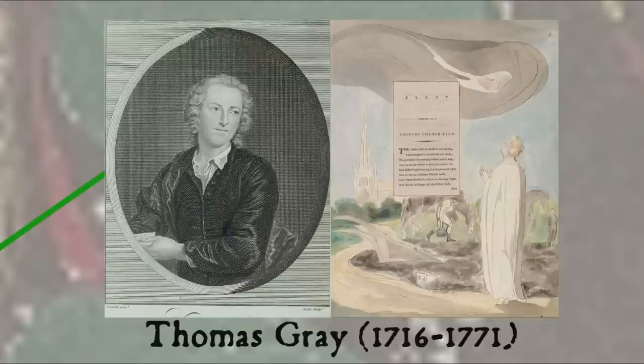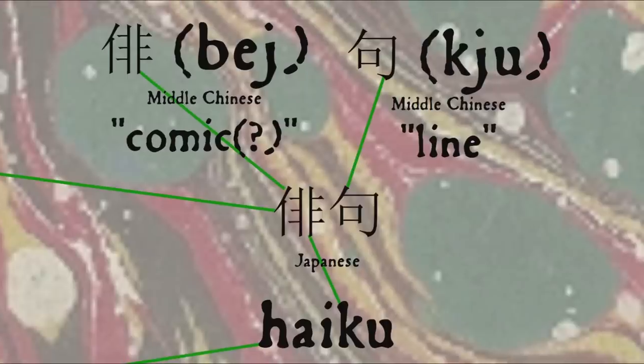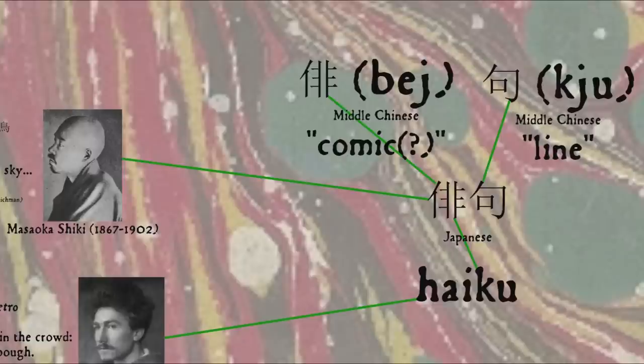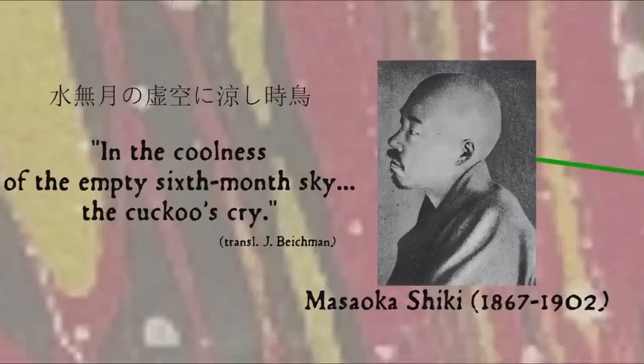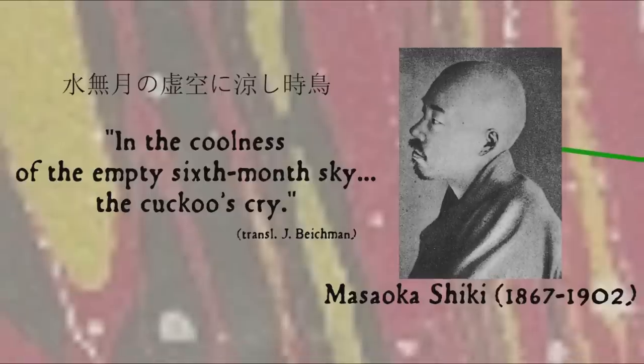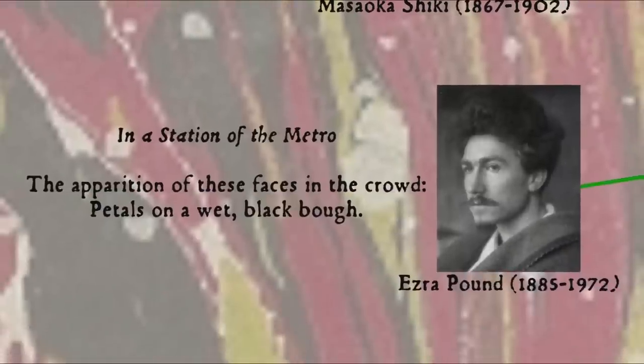But English poetic forms have come from non-Greek sources as well, such as the haiku borrowed from a Japanese tradition. The Japanese word haiku is a contraction of haikai no ku, comic verse, coined by the 19th century poet Masaoka Shiki, from the middle Chinese words pái, perhaps meaning comic, and jù line. Originally a comic form, haiku came to refer to a short poem made up of five, seven, and five on, roughly speaking syllables, featuring two images or ideas separated by a cutting word, and a seasonal or nature reference. The form was adopted into English in the early 20th century and taken up by such poets as Ezra Pound, though both the form and the content of English haikus have been treated loosely.